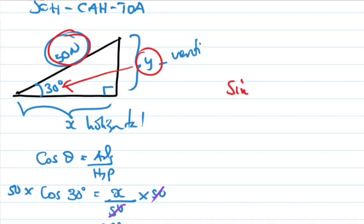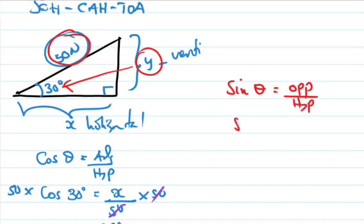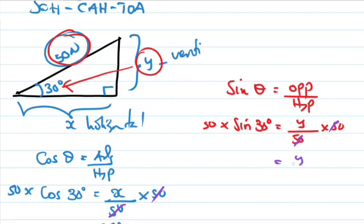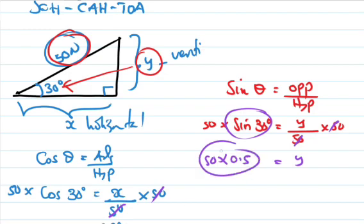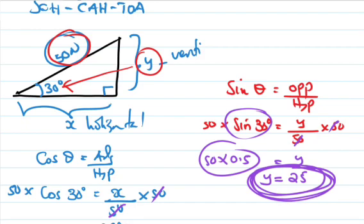Now in the y-direction we are going to use sine. Sine theta is equal to opposite over hypotenuse. So sine 30 degrees equals y divided by 50. We multiply both sides by 50, so y = 50 multiplied by sine 30. Sine 30 is 0.5, which is a half, and half of 50 is 25. So y equals 25 — this is the component of the force in the vertical axis.